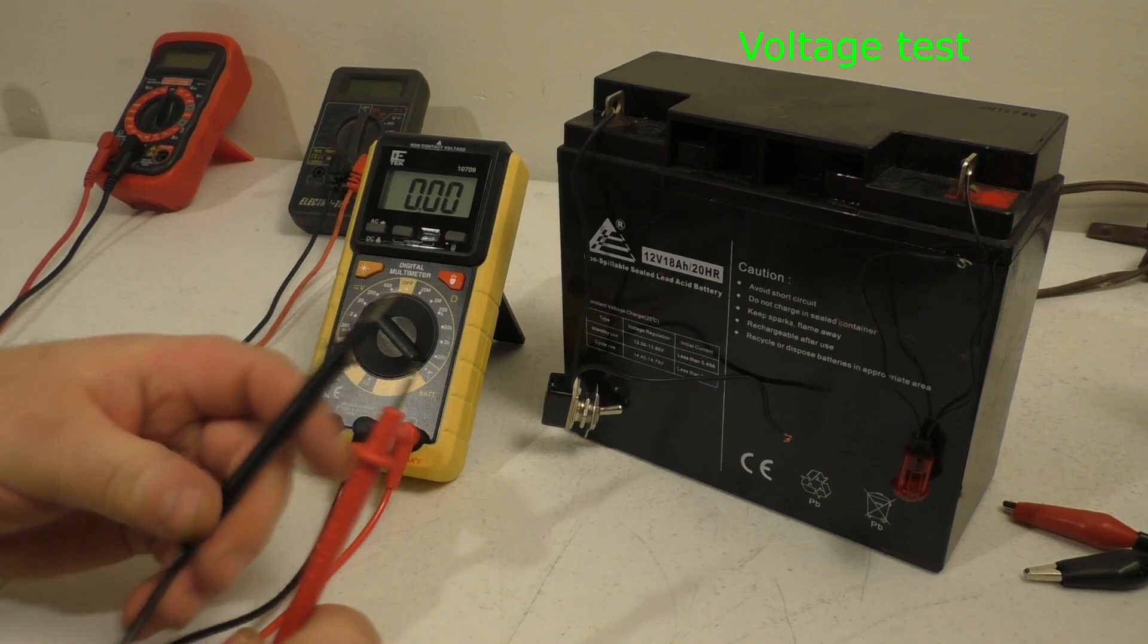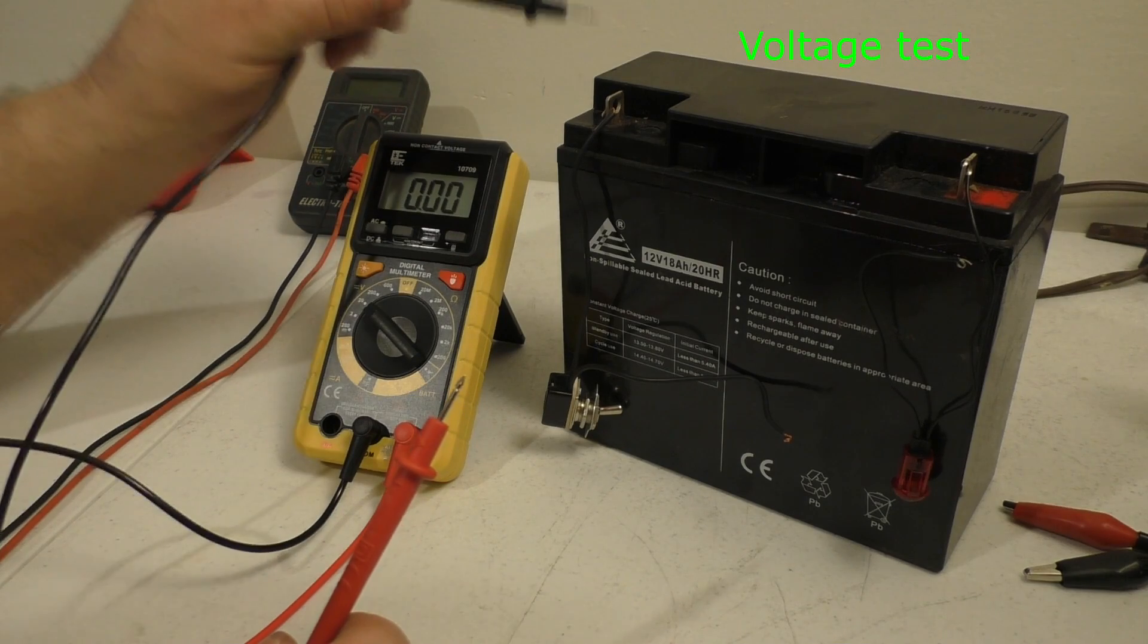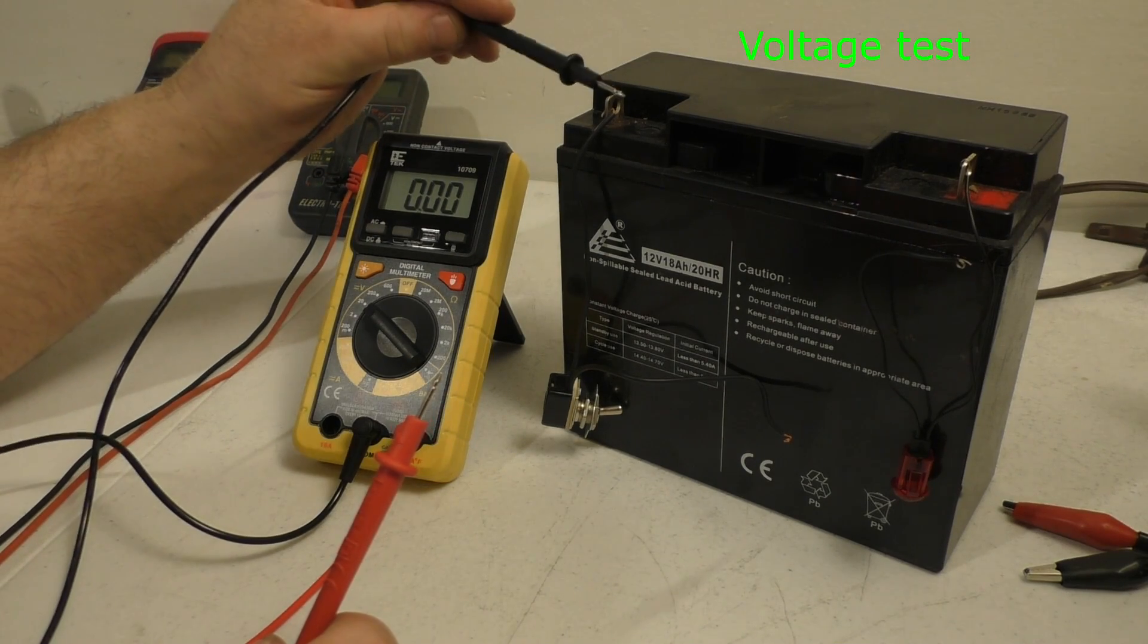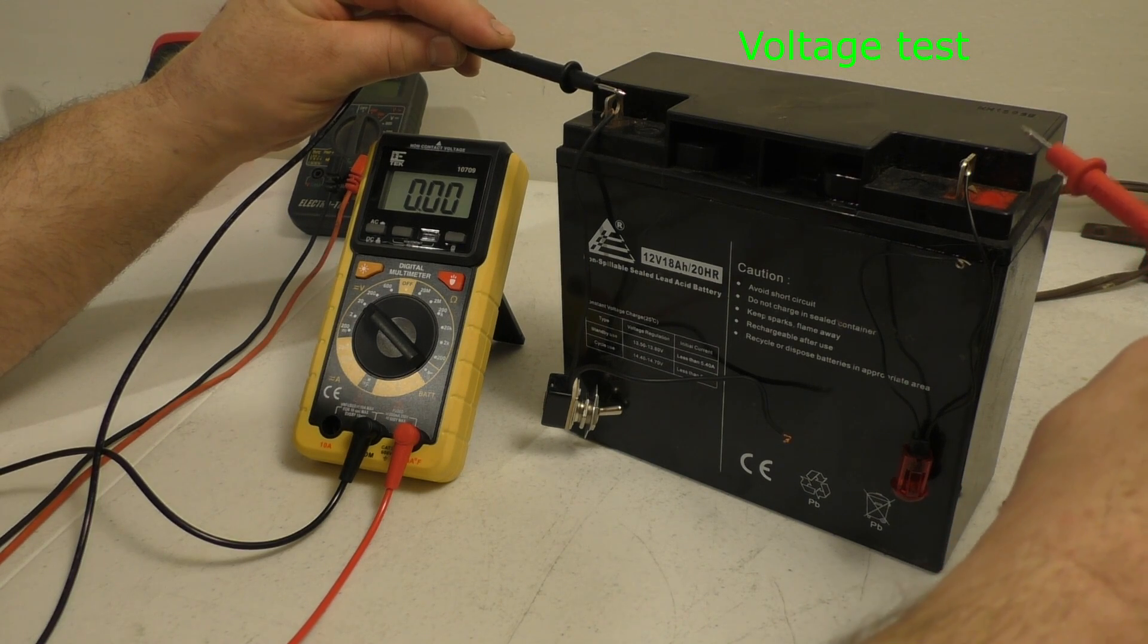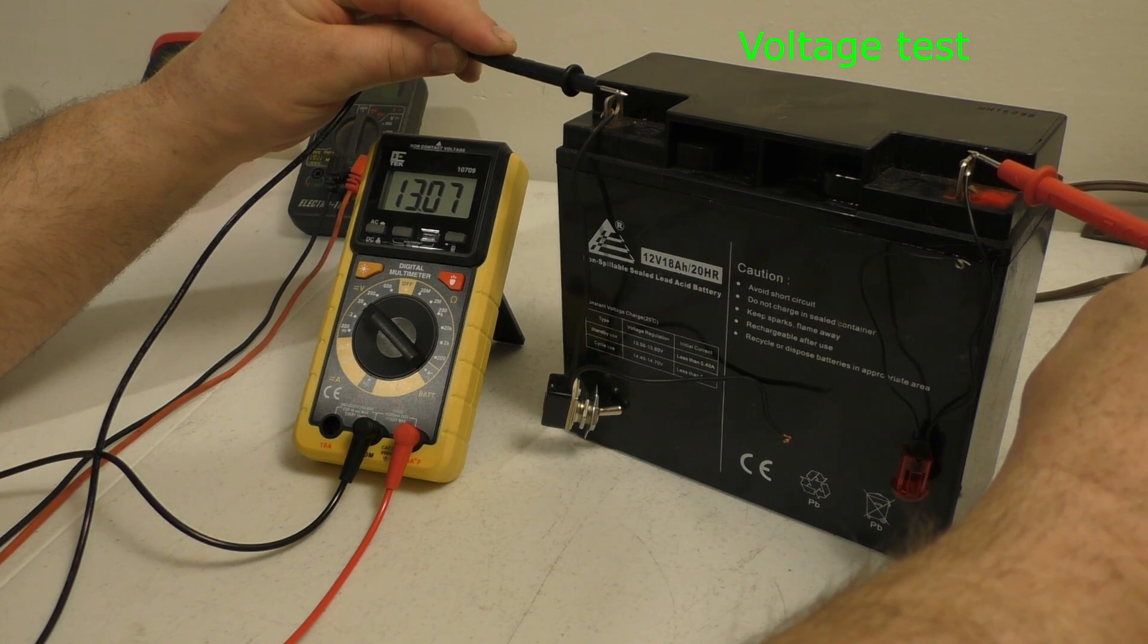Now picture this is a car battery, your negative terminal, your black one. You'll just go ahead and touch the black on the black and red on the red, and I'm getting 13.07 volts.